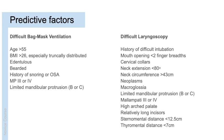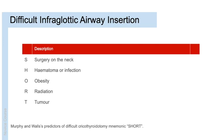Predictive factors for difficult direct laryngoscopy include: history of difficult intubation, mouth opening less than two finger-breadths, presence of cervical collars in trauma, neck extension less than 80°, neck circumference greater than 43 cm, cancerous growths, large tongue, limited mandibular protrusion (B or C, or upper lip bite test 2–3), Malampati 3 or 4, high arched palate, buck teeth, sternomental distance less than 12.5 cm, or thyromental distance less than 7 cm. Difficult infraglottic airway insertion is predicted by the mnemonic SHORT: Surgery on the neck, Haematoma or infection, Obesity, Radiation therapy to the neck, Tumour distance.